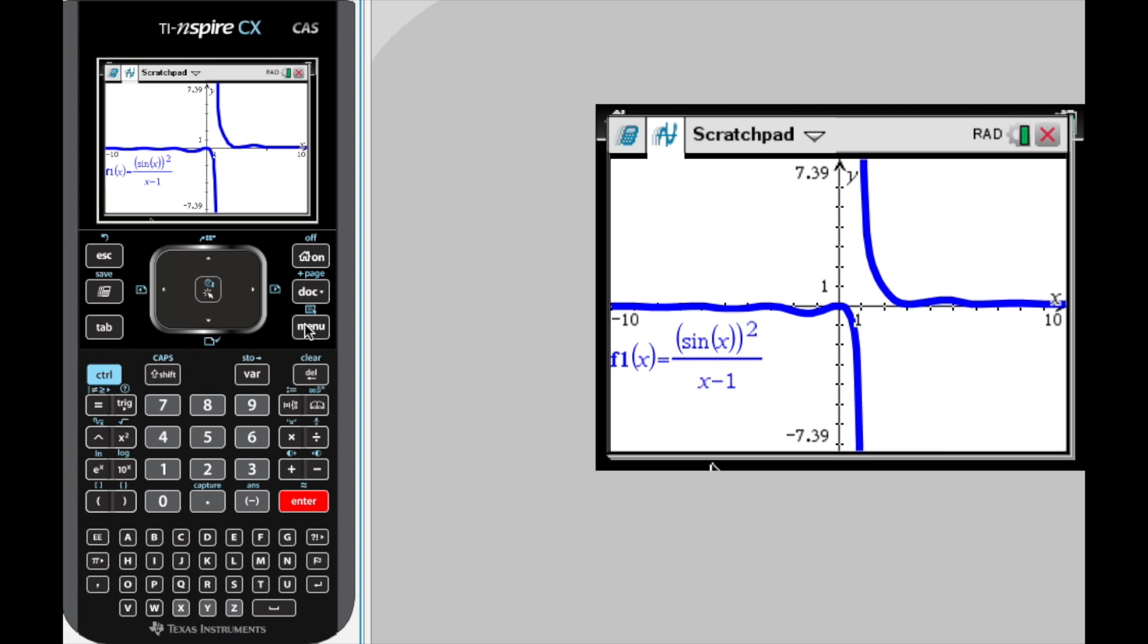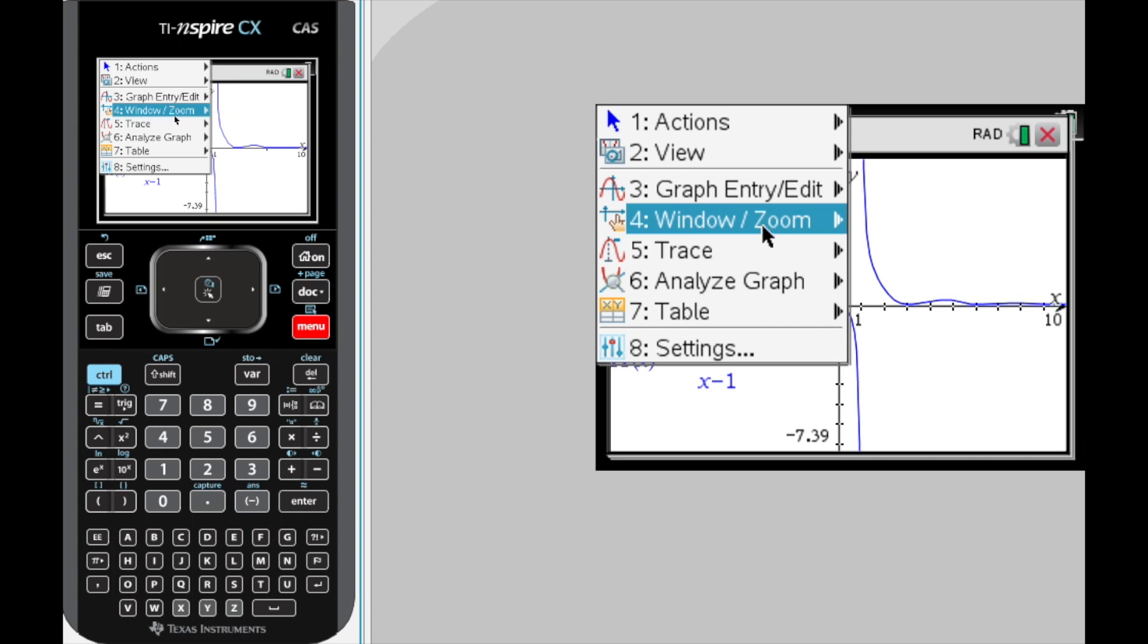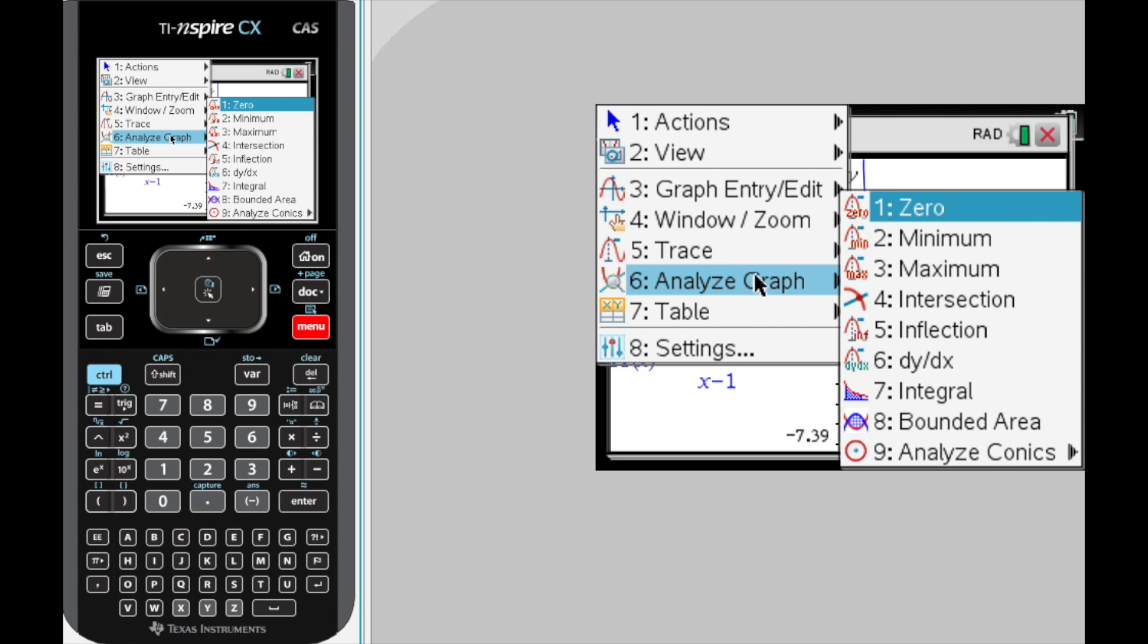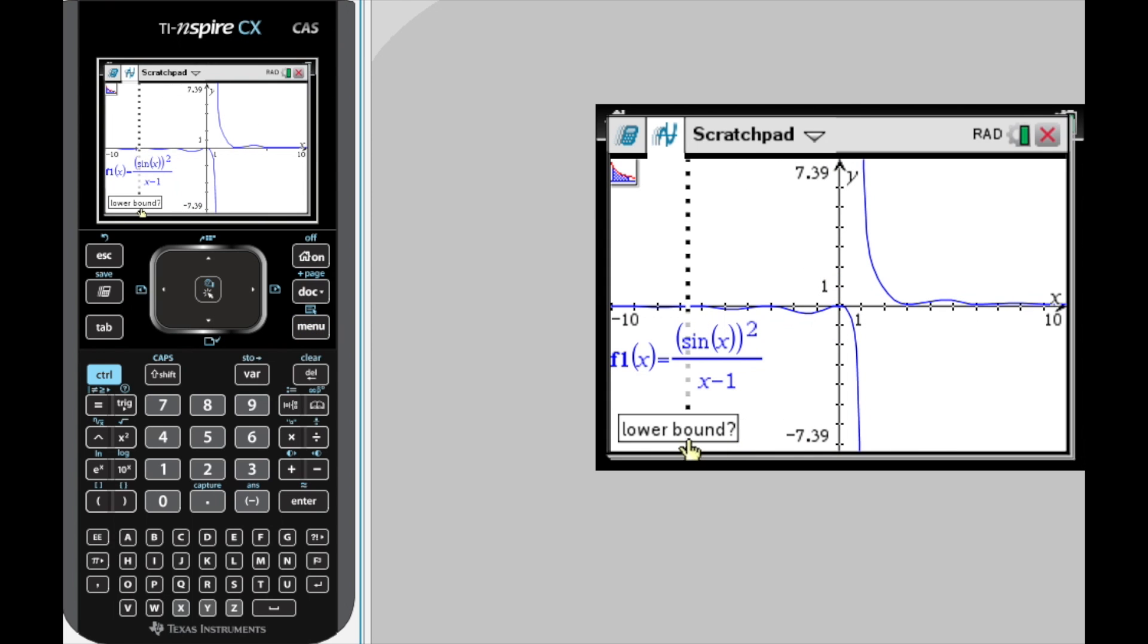And we want to integrate that between the value of 2 and 5. So actually, now that I have this up here, graphically it is easier with the 83 or 84. If somebody knows how to do this with an Inspire, give me a hint below. Because if I did know, I have forgotten it. We are going to analyze the graph. We are going to look for an integral. Now, here is where I am confused and I am the one that teaches this stuff. Lower bound.